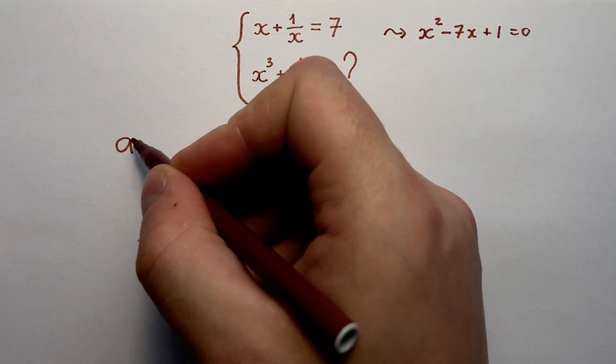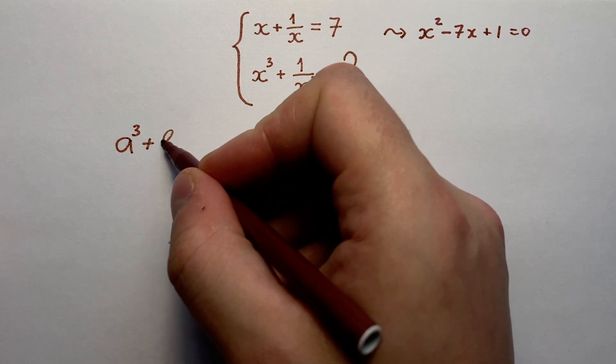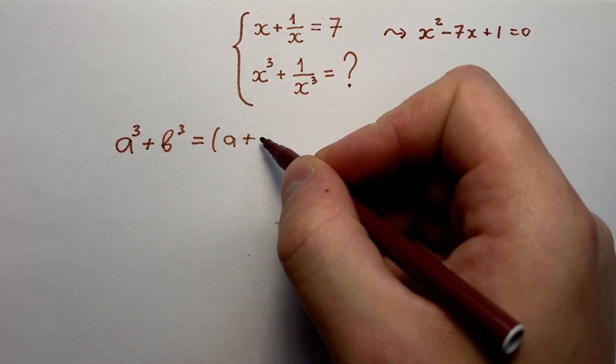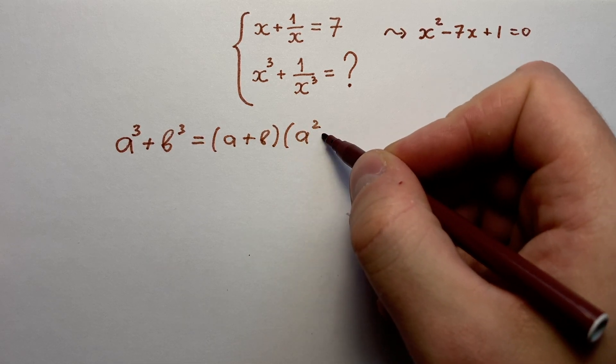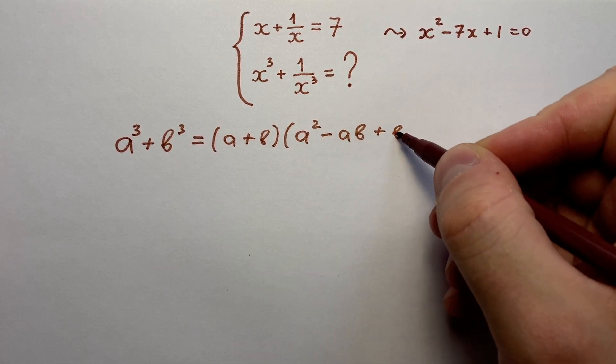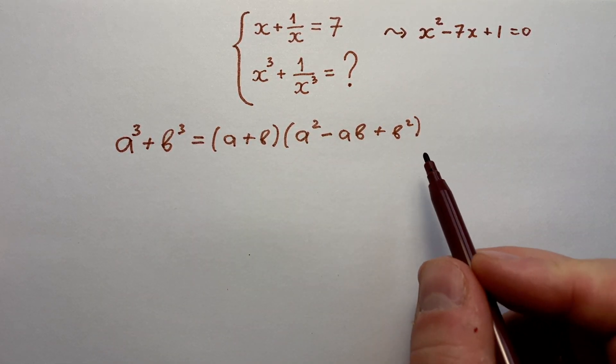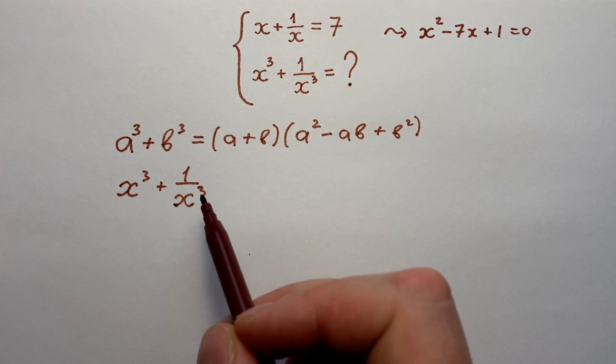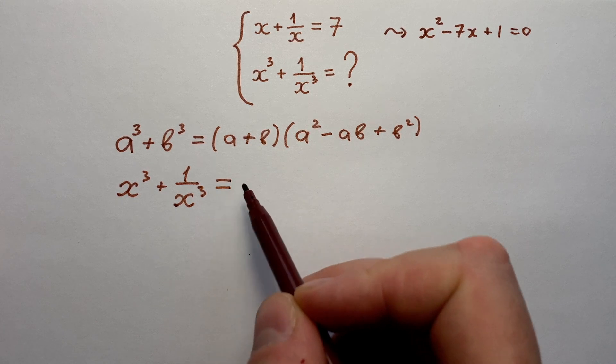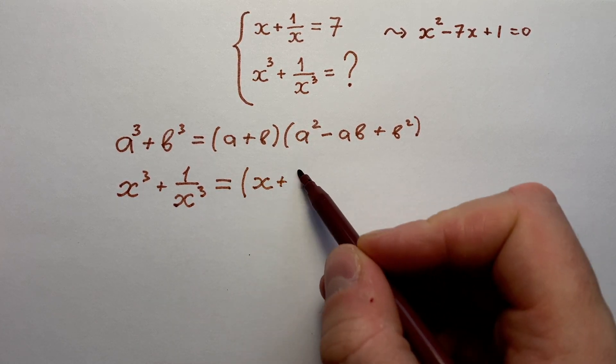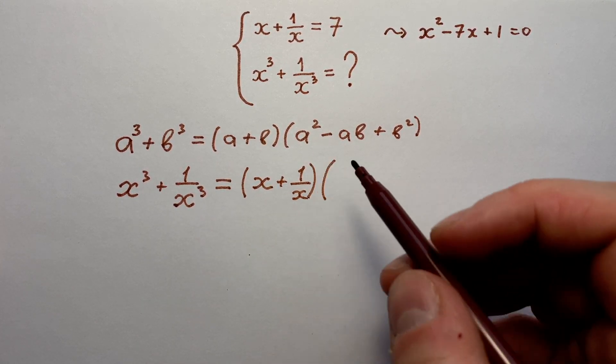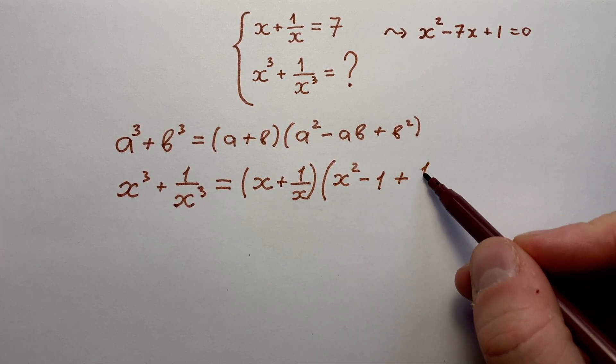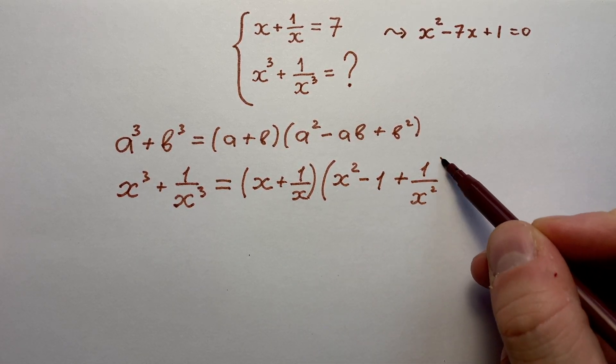He knew that a³ + b³ = (a + b)(a² - ab + b²). So using this basic formula we can write x³ + 1/x³ = (x + 1/x)(x² - 1 + 1/x²). Very good.